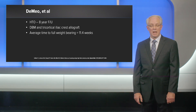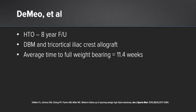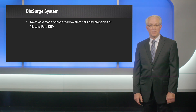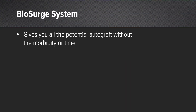Tameo et al. in 2010 reported on a series of 20 patients who underwent a medial opening wedge high tibial osteotomy with an average eight-year follow-up. He used DBM and tricortical iliac crest allograft as his augmentation, and found the average time to full weight bearing was 11.4 weeks, with one patient taking 32 weeks to heal enough to begin weight bearing. By using BioSurge in this case, I felt that I took advantage of the bone marrow stem cells and AlloSure properties, giving all the potential of autograft without the morbidity or time consumption.